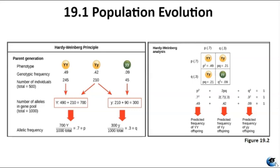In theory, if a population is in equilibrium with no evolutionary forces at play, its gene pool and genetic structure would remain constant from generation to generation. In reality, natural populations are constantly evolving due to various factors like drift, mutation, migration, and selection. The Hardy-Weinberg principle provides a mathematical reference point of a non-evolving population against which evolving populations can be compared. Deviations from expected allele or genotype frequencies indicate evolutionary changes. If the allelic frequency measured in the field differs from the predicted value, scientists can make inferences about what evolutionary forces are at play.